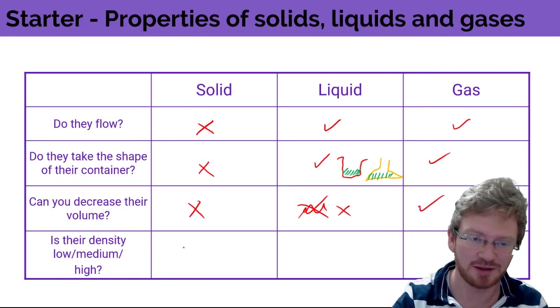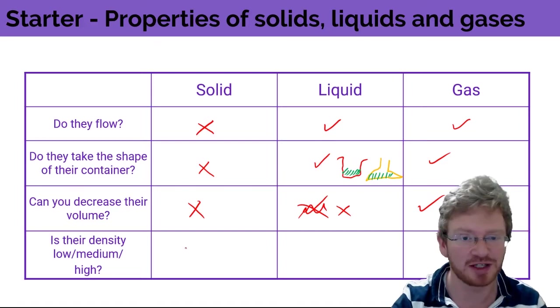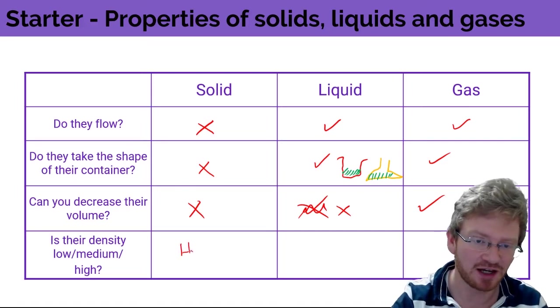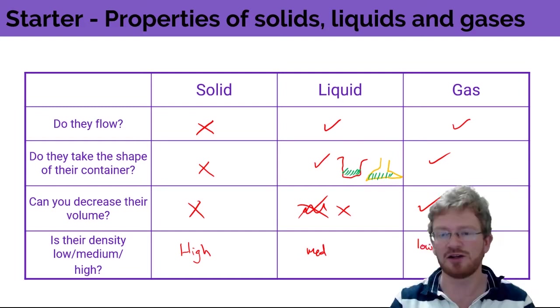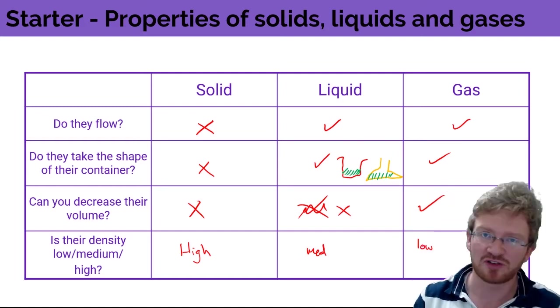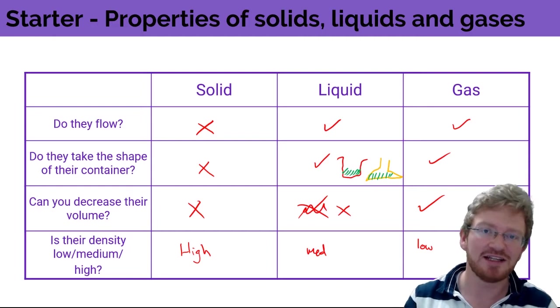Is their density low, medium, or high? Generally speaking, solids have the highest density, liquids have a medium density, and gases have a low density. Now there are some important exceptions to that. Annoyingly, it's the most common chemical found on our planet - water actually is less dense as a solid than as a liquid. But that's really unusual. Generally speaking, solids are slightly denser than their liquids.